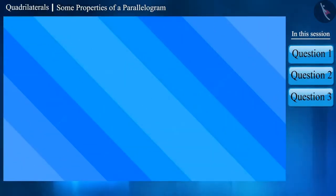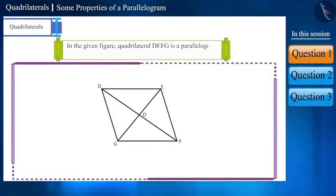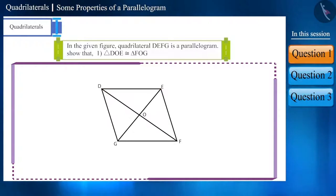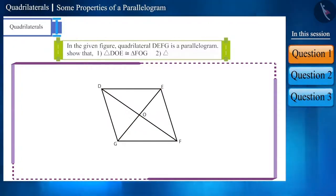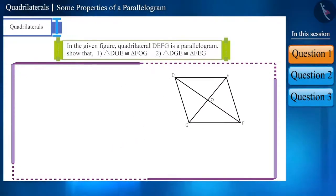In the given figure, quadrilateral DEFG is a parallelogram. Show that triangle DOE and triangle FOG are congruent. Triangle DGE and triangle FGE are also congruent.